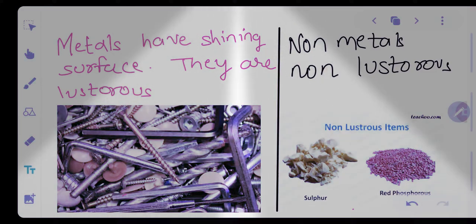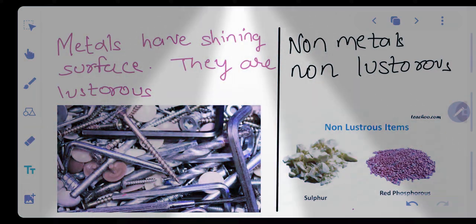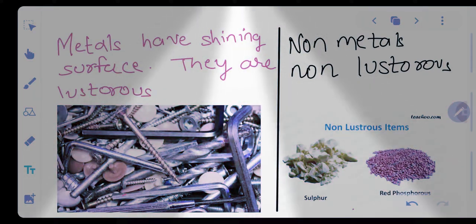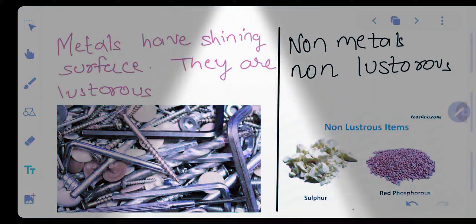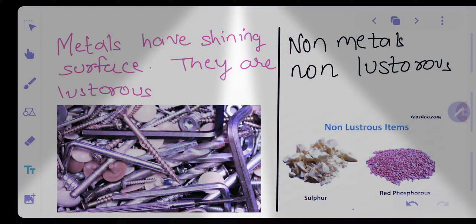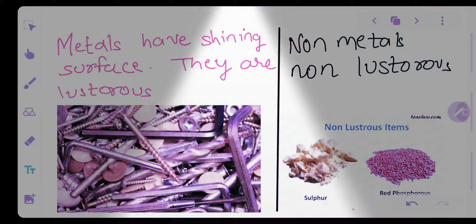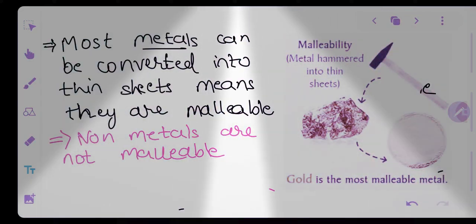Moving ahead — the second property is the lustrous property of metals, meaning metals have a shiny surface. Their surface is such that when you shine light on it, the light reflects back. So metals' surfaces are generally more lustrous, while non-metals are non-lustrous. You can see various tools in the picture which are shining as light is incident on them, while sulfur and red phosphorus are non-lustrous.